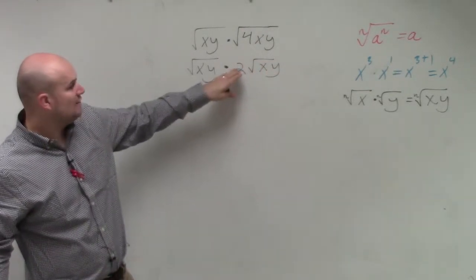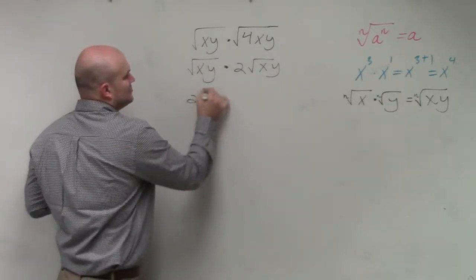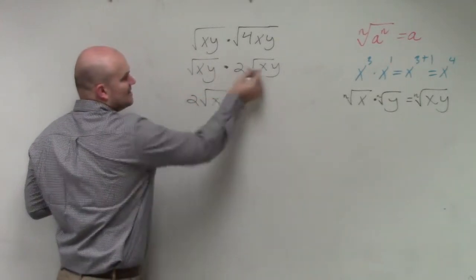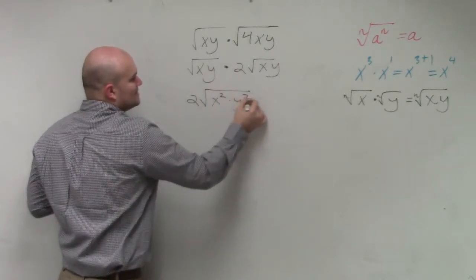Now I can multiply all of these. I can multiply my two radicands together, which would give me 2 square root of x times x is x squared, y times y is y squared.